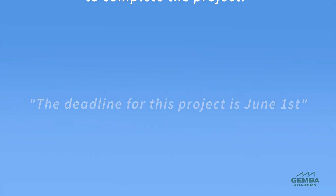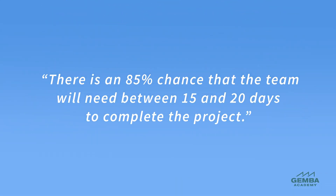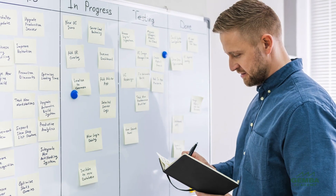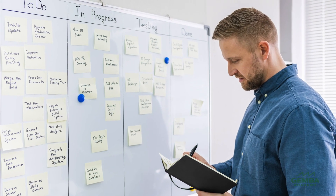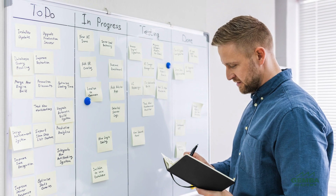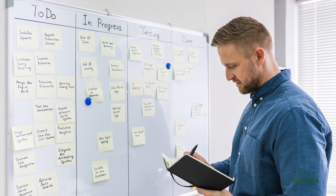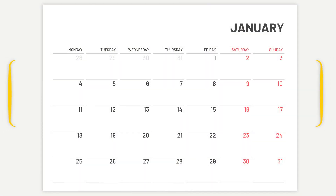In other words, instead of saying the deadline for this project is June 1st, Kanban planning would determine there's an 85% chance that the team will need between 15 and 20 days to complete the project. The Kanban planning approach commits to delivery dates and outcomes, but it does so based on data-driven forecasting. Kanban planning aims for an accurate estimate of a range of time rather than an exact end date.